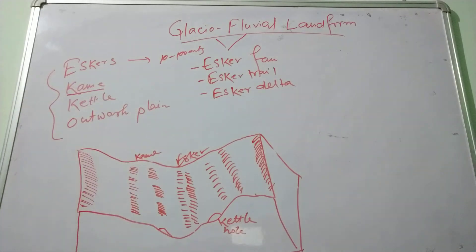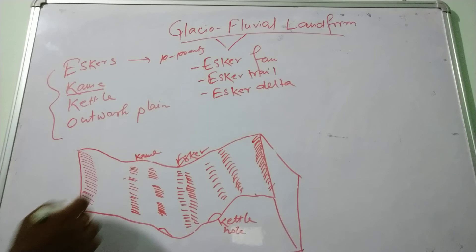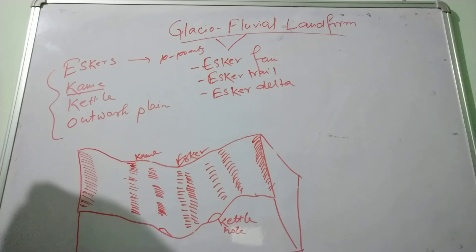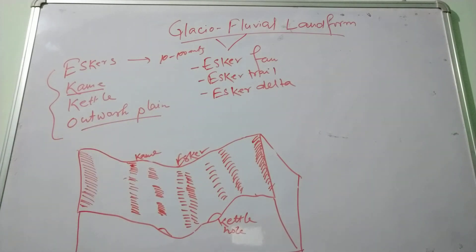Now, come to kames. Kames are derived from the Scottish word which means stiff-sided mounds, deposited by meltwater at the edge of retreating ice sheets. The outwash plains are formed at the edge of the terminal moraines.